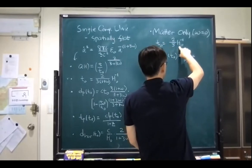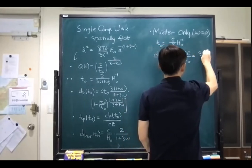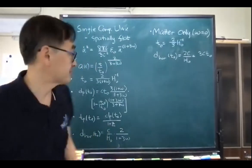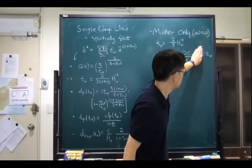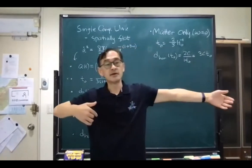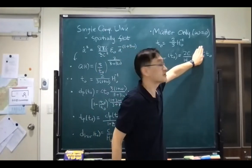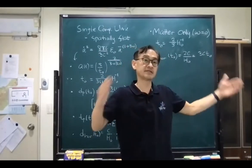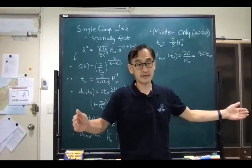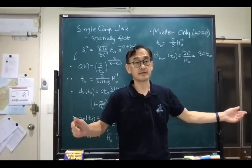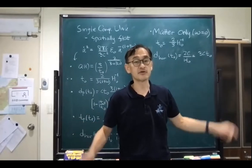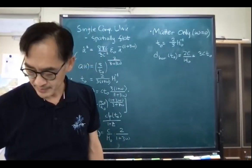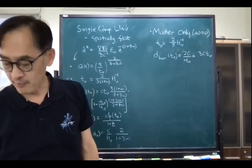I want to get rid of H₀, so I have three c t₀. So in the matter-dominant universe, this c t₀ is the distance — the horizon distance. When there is no expansion, speed of light times t₀ gives the distance that light has traveled during time t₀ if the universe was static. But we have a factor of three, and that comes from the expansion itself.